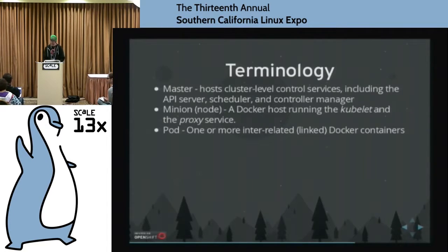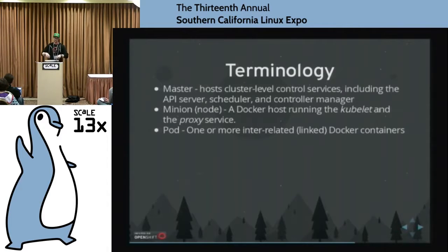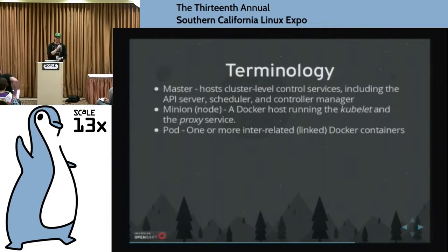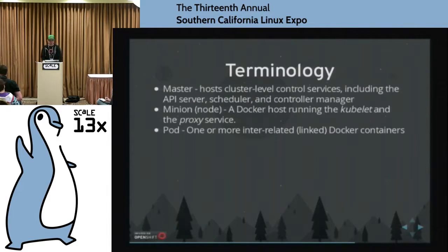Another service that's going to be on these minions is a distributed key-value data store called etcd — so it's kind of like having a distributed /etc folder, where you can have it kind of like a memcache store on disk. People could write configuration things and it'll spread out across the cluster. Also on these minions, you'll have Docker containers.